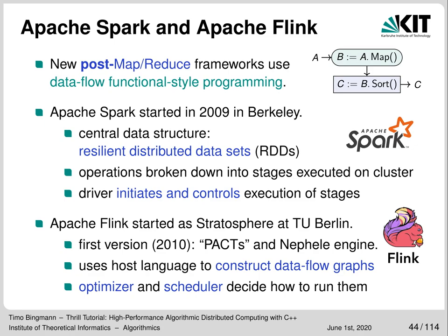Then there are what I call post-MapReduce frameworks — Apache Spark and Apache Flink. Spark was started in 2009 at Berkeley and is centered around so-called RDDs and later data frames, following a driver-master-worker architecture and becoming very popular in the industry. Flink, on the other hand, was started as Stratosphere at TU Berlin by the group around Professor Volker Markel, with a strong background in database design. Flink has an optimizer and parallel work scheduler similar to a relational database, and Spark has also been adding these components lately.